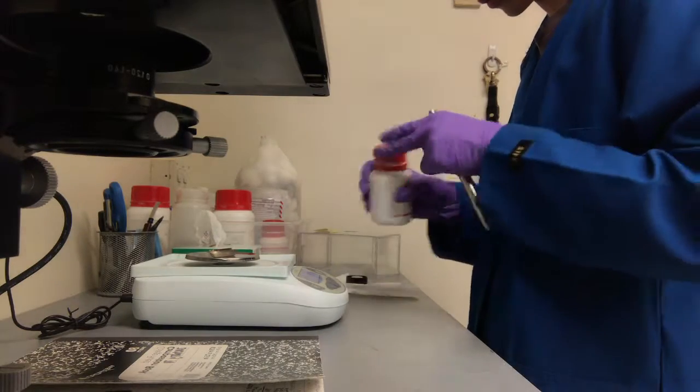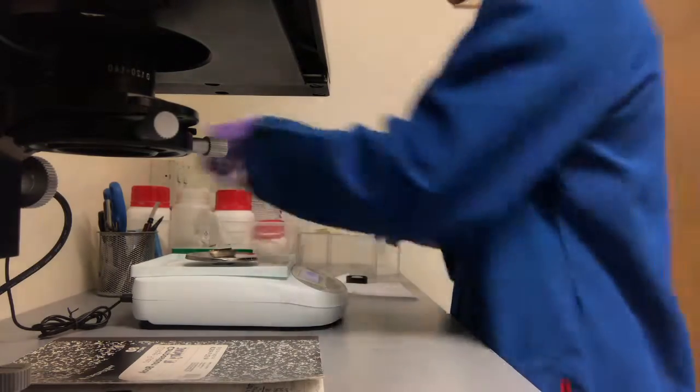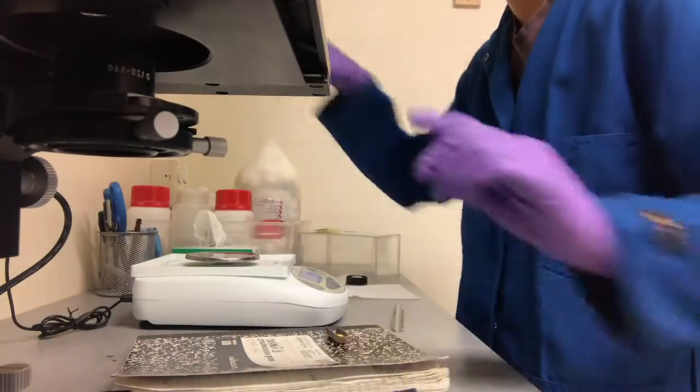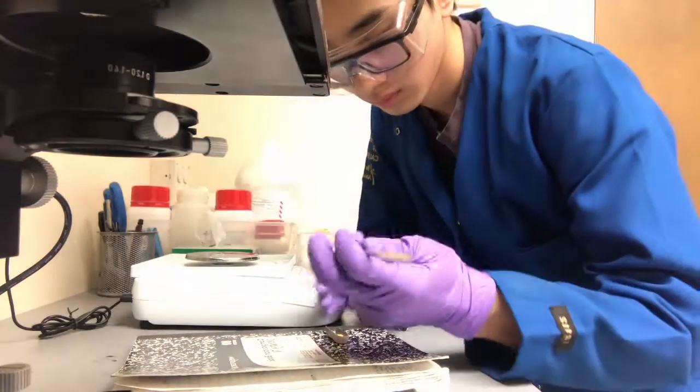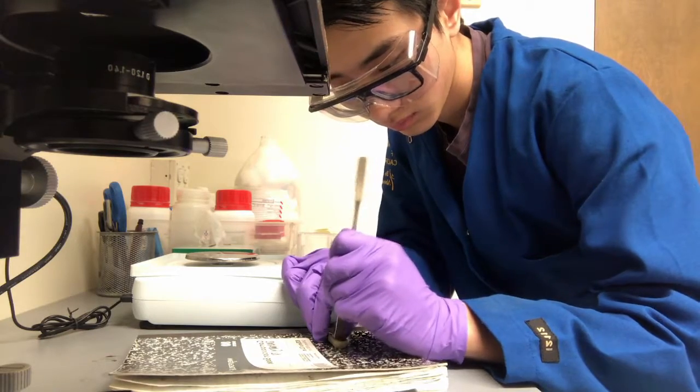I will do the same for molybdenum trioxide. Afterwards, I will take out a spatula to break down and flatten any big chunks of the chemical. This will allow the chemicals to melt faster and easier.